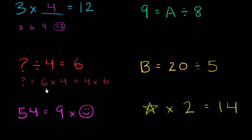So what is 6 times 4? Well, 6 times 1 is 6, 6 times 2 is 12, 6 times 3 is 18, 6 times 4 is 24. So question mark, this is equal to 24. So question mark must be equal to 24. Write that down. Question mark in this case is equal to 24.